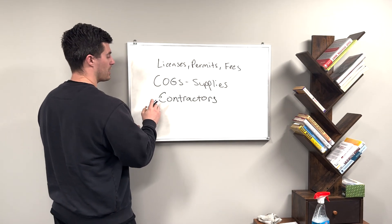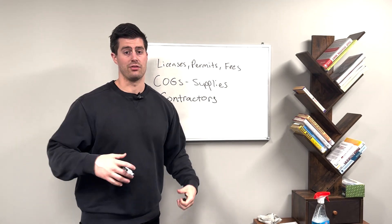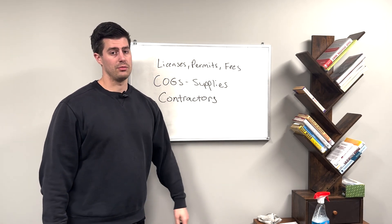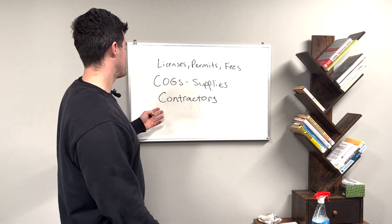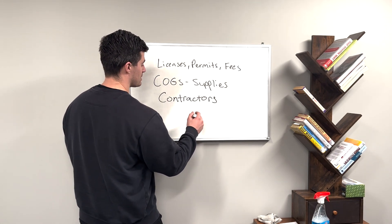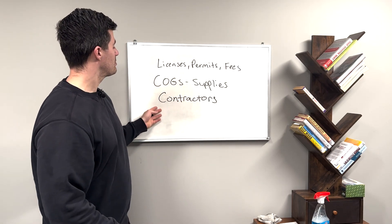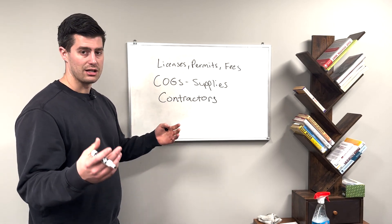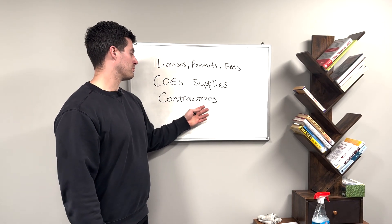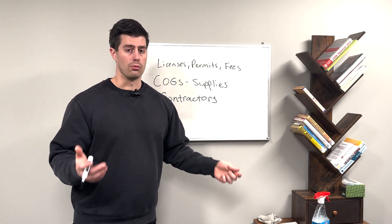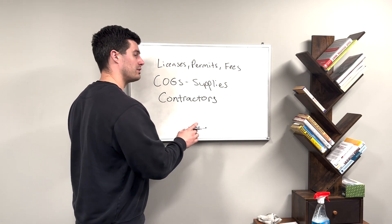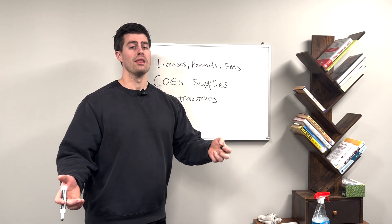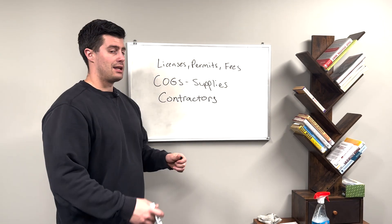Contractors: this would be for labor. If you hire any independent contractor — for example in my bookkeeping business, if I hire somebody to do data entry, categorization, or sales — I'd consider them a contractor. I see it labeled as contract labor or subcontractor expense as well. General contractors might hire subcontractors to help them perform labor. My wife has an interior design and home organizing business — if she hires people to go to houses and organize kitchens and pantries, those are contractors. If you have a trucking company and hire drivers, those are contractors too.